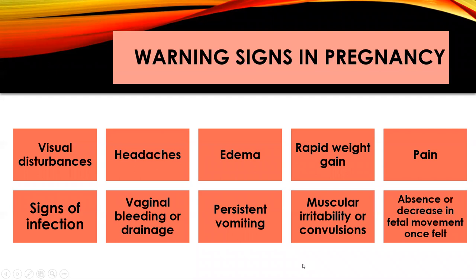If you listen to any part of this lecture, this is the most important part — for nurses, for people having babies, and for friends and family of those having babies. These are warning signs in pregnancy that require immediate medical attention: visual disturbances, headache, edema, and rapid weight gain all go with one specific disease process. Pain that doesn't go away — epigastric pain, back pain that comes and goes, or low cervical pain — needs investigation. Signs of infection include fever of 100.4 or more, rapid pulse, rapid respiration, foul smell, discharge, and leaking.